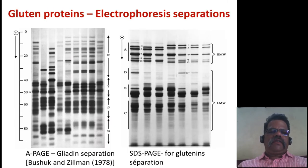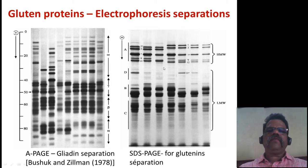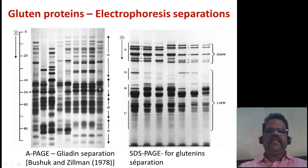This shows separation of gliadin using acid polyacrylamide gel electrophoresis, and separation of glutenins using SDS-PAGE. These are high molecular weight glutenins and these are low molecular weight glutenins. The gliadins include alpha gliadin, beta, gamma, and omega gliadin.